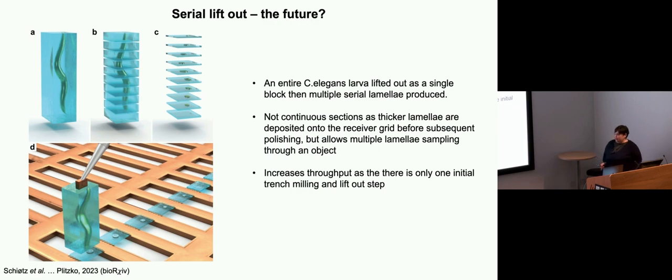This has a much higher throughput than traditional lift-out because you only have to lift this out once. With the advances we've had in recent years with software and automation, this has got a decent success rate. I think I saw one of these talks, it was like out of 27 of these, I think 25 ended up in successful lamellae. So that's a very good success rate compared to the earlier days of lift-out. I think this is quite exciting for the future for thicker samples.